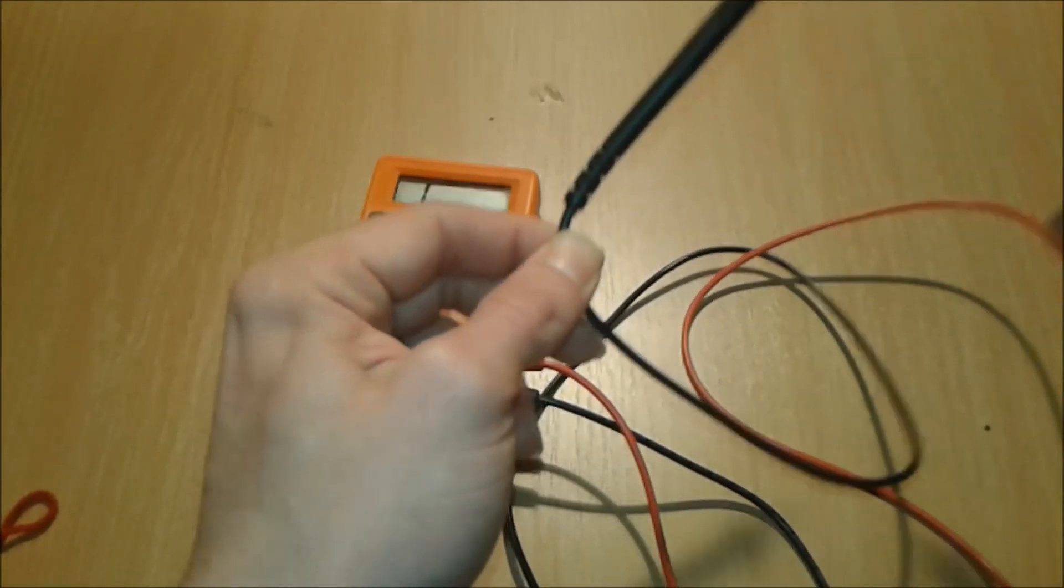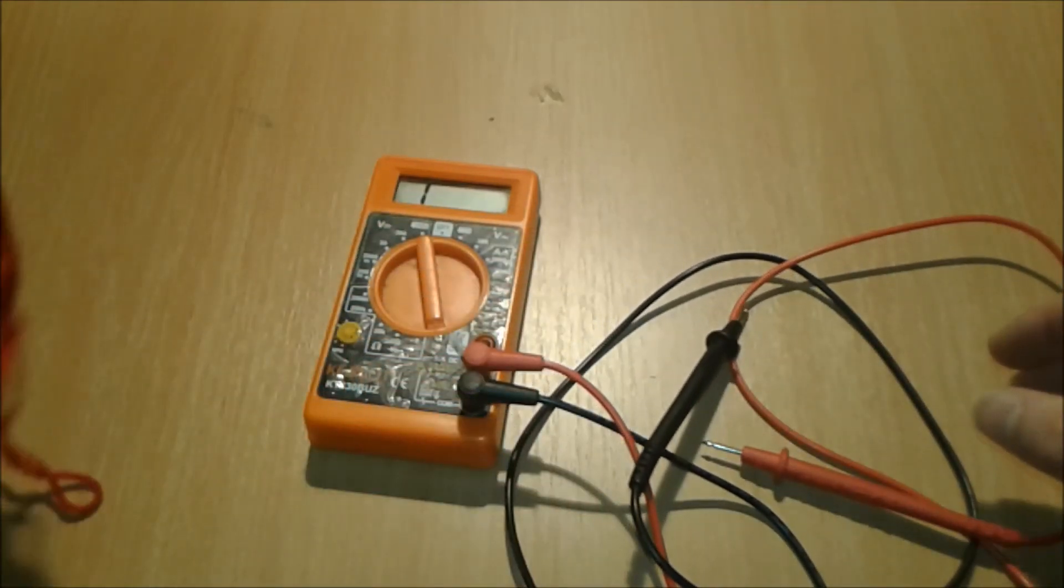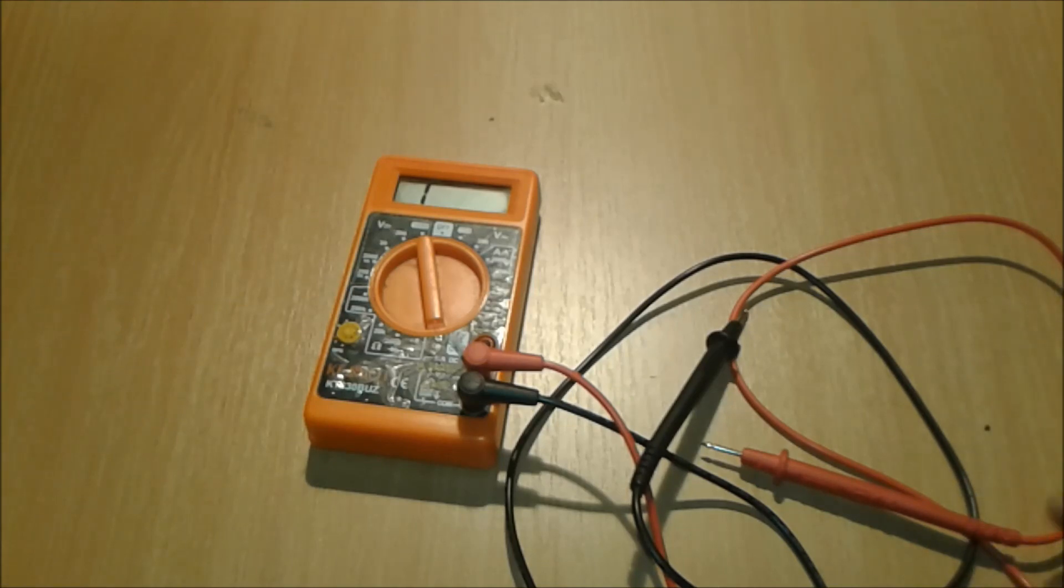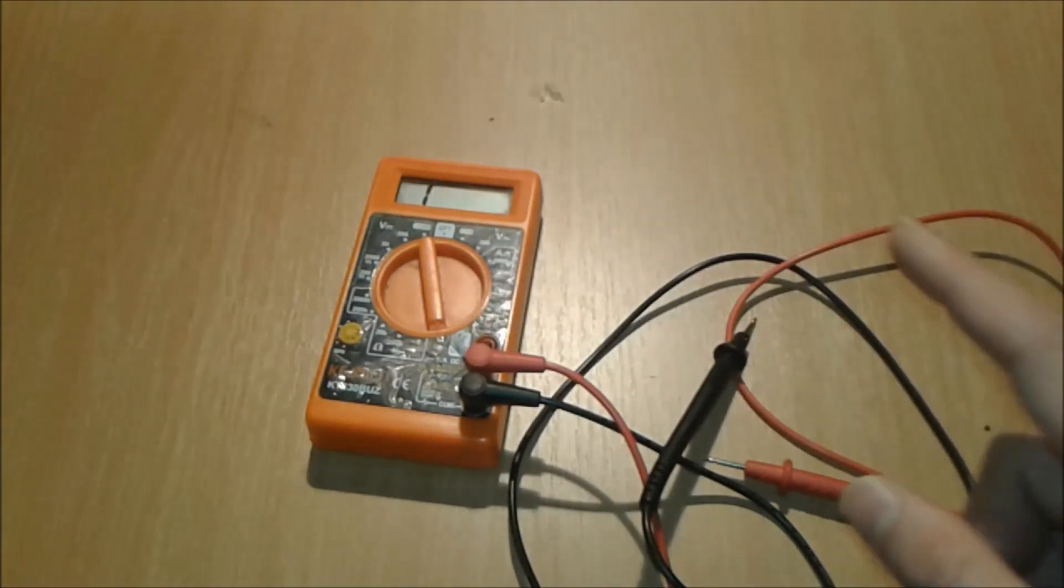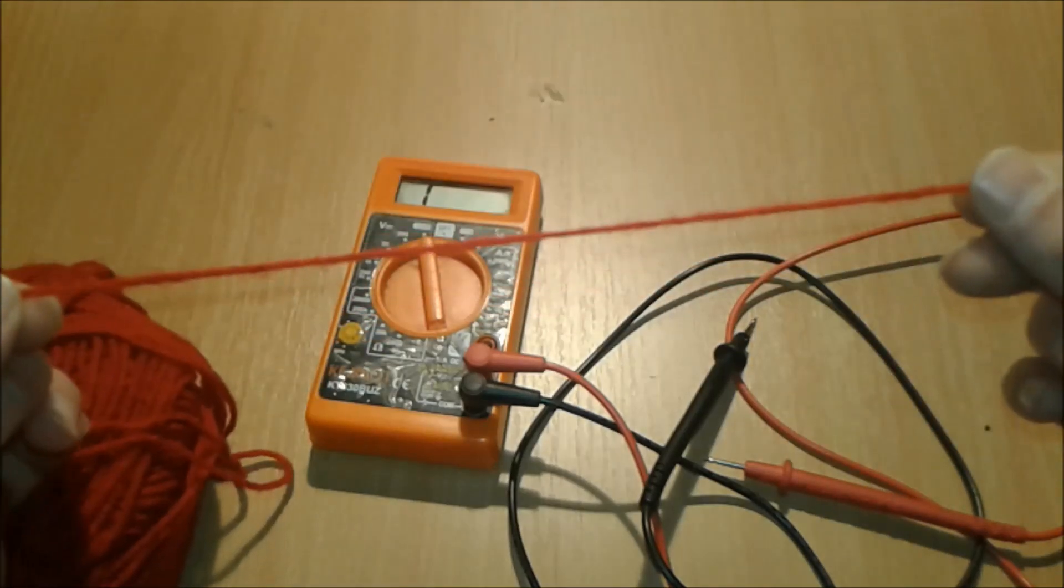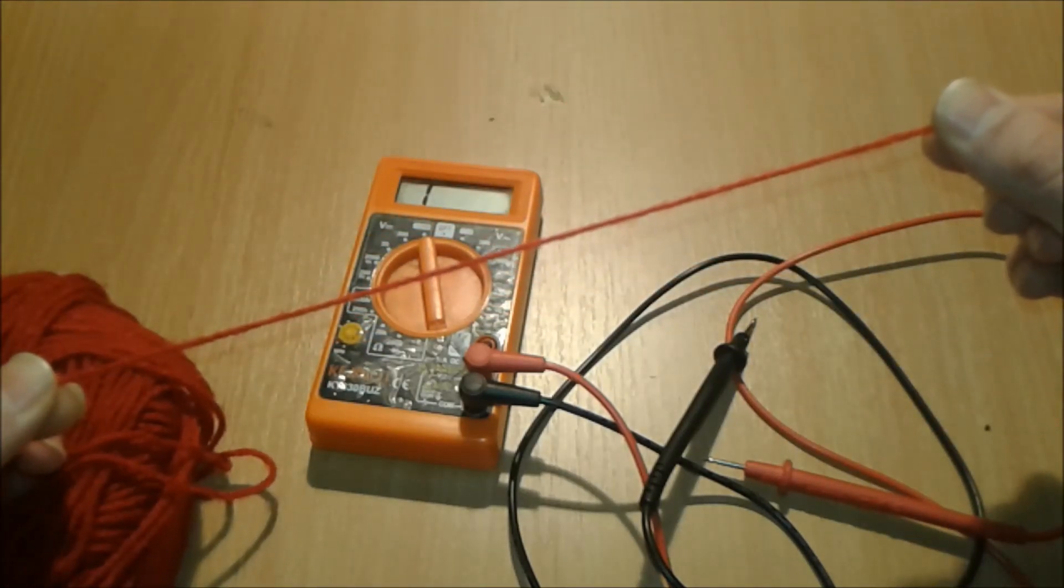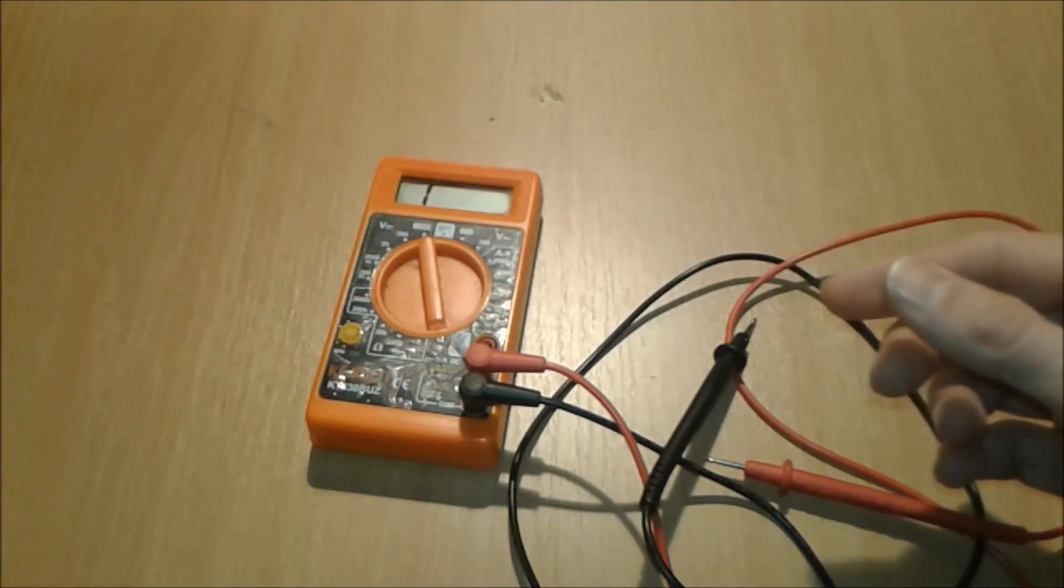So once again, how to check continuity on the multimeter for beginners: you have to think of it as a string of wire. This one is intact, we got continuity. This one, no leading nothing, we got no continuity.